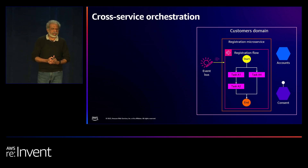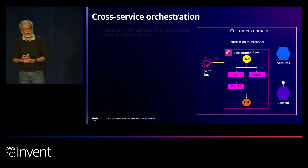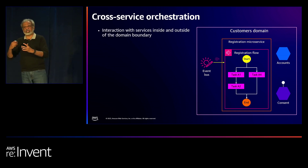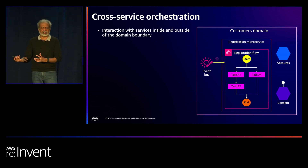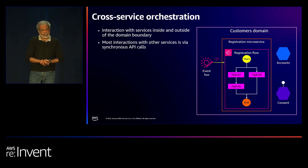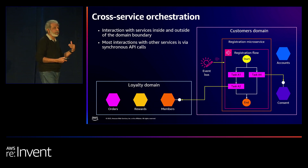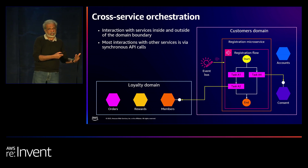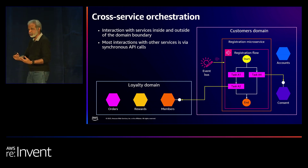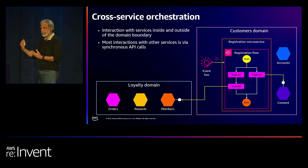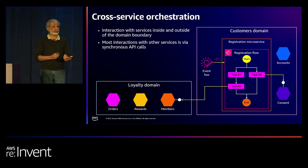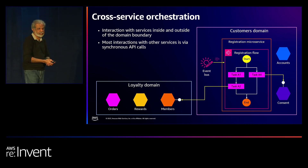For cross-service orchestration, typically you'd use a Lambda function to reach external services, but just recently there was an announcement that from Step Functions you can directly hit HTTP targets now — making your functionless life even simpler and easier. Let's move to distributed orchestration.